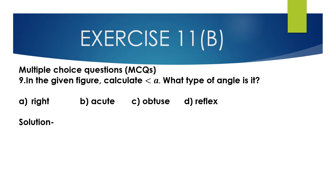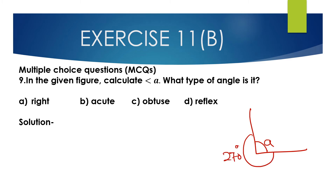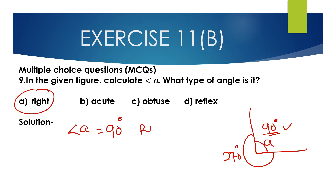Question number 9, multiple choice: In the given figure, calculate angle A. What type of angle is it? Options are right angle, acute angle, obtuse angle, and reflex angle. From the figure, angle A is 90 degrees, so this is a right angle.